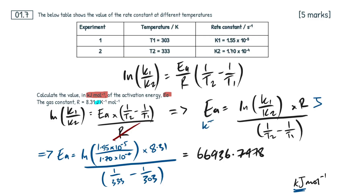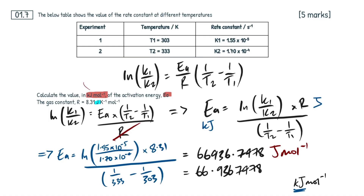You can essentially ignore the per mole and per Kelvin — just focus on the energy unit. We want to put our final answer in kilojoules per mole. So this value right here is in joules per mole. Joules is the key unit. To get from joules to kilojoules, all you do is divide by 1000. So if we divide 66,936.7478 by 1000, we get 66.9367478 kilojoules per mole.